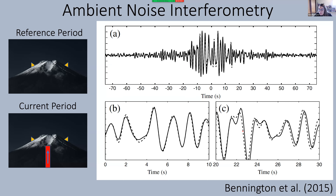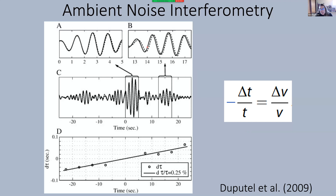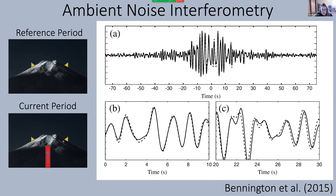Now let's say we have intrusion of magma into the system. That's going to cause changes in the volcanic edifice — not only magma moving in, but also the opening of fractures as magma moves into the shallow summit. All of that causes slowdowns in the edifice as seismic noise travels between the two stations. The correlation function will look similar but will be a slowed-down version of the reference period, shown as a solid line offset in time. We measure that offset and from those lags we determine the changes in seismic velocity occurring in the subsurface relative to the reference time period.